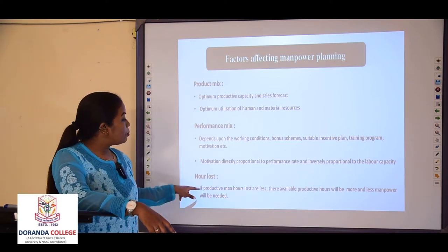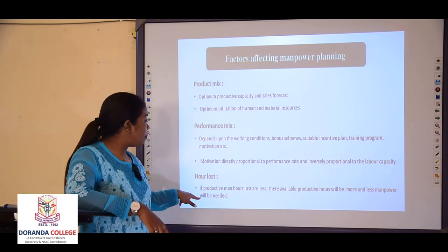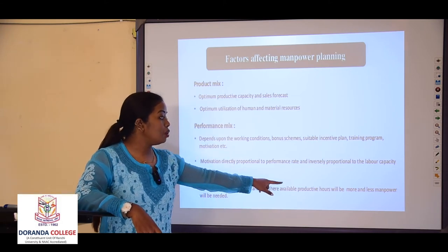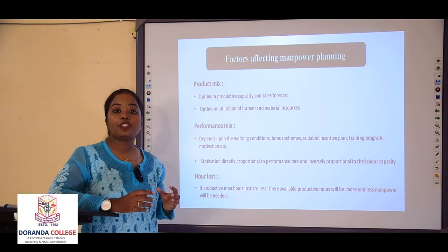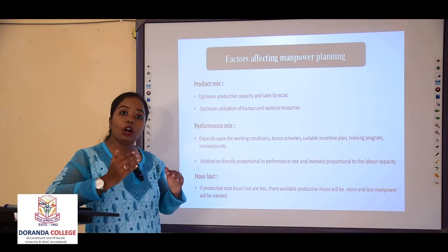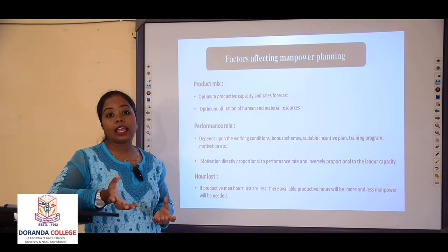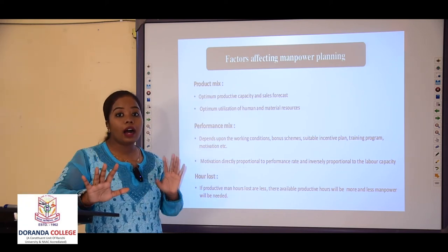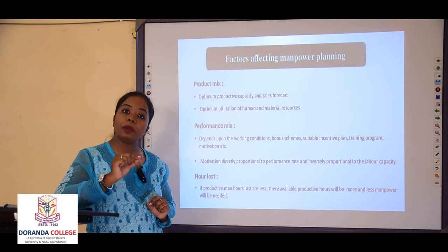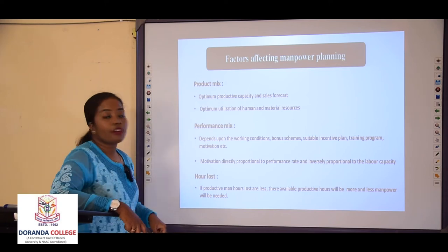Then comes hour loss. If productive man hours lost are less, the available productive hours will be more and less manpower will be needed. If your employees can perform excellently even in less time because they have the capability, then where 10 people's work can be done by 8 capable people, you don't need 10 people — your manpower requirement reduces and your work still gets done. These are the factors which affect manpower planning.